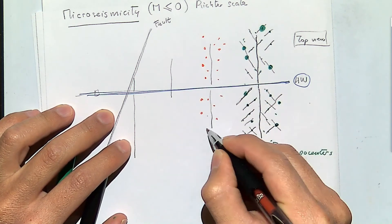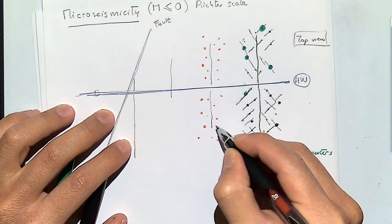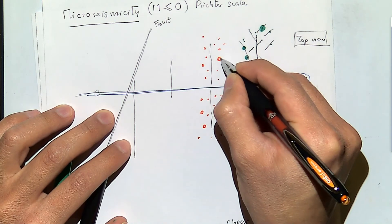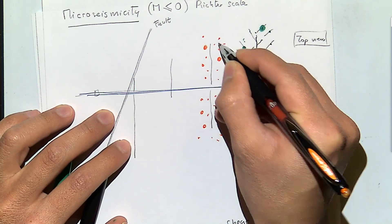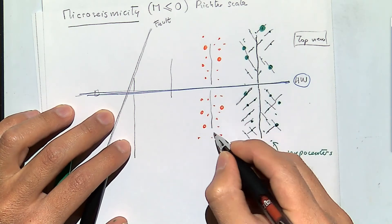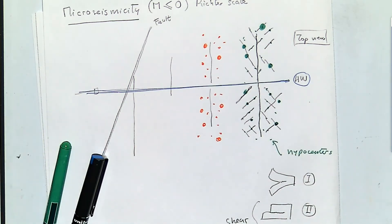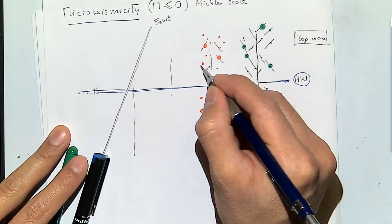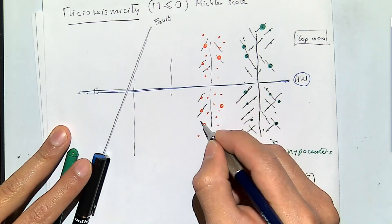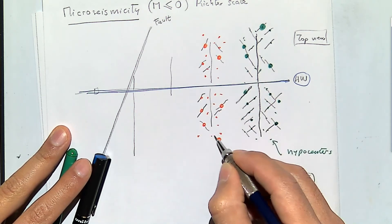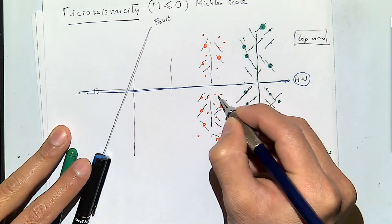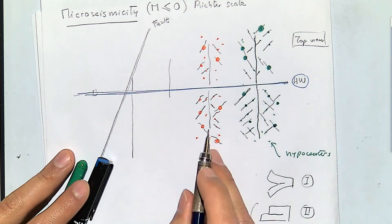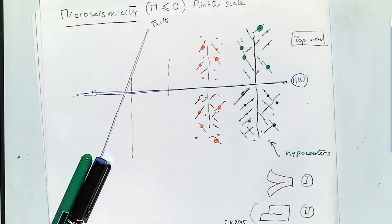Some of the dispersion in micro seismic clouds is real, but some is not — it is quite difficult to locate these events and there is a lot of uncertainty in inverting the hypocenter. If you don't do a good job inverting the hypocenter, you may be placing micro seismicity where it actually is not — it's just a location error.